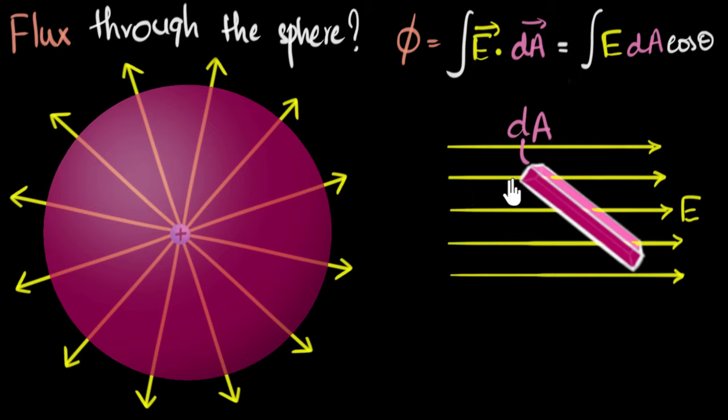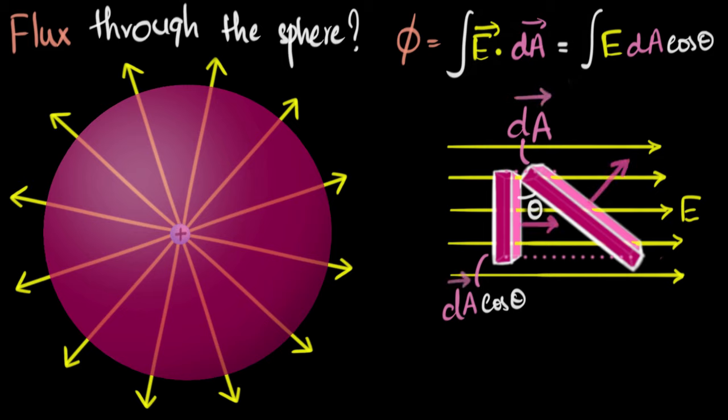Well, the idea is if you see from the field's point of view, it can't see the entire area. From the field's point of view, the effective area that it's flowing through is only this much, the perpendicular component. And so if the angle between these two is θ, then notice the effective area through which the field is flowing is dA cos θ. From this right angle triangle, this is the hypotenuse, this is the adjacent side, the adjacent side becomes the cos component. And that's where the cos θ comes from.